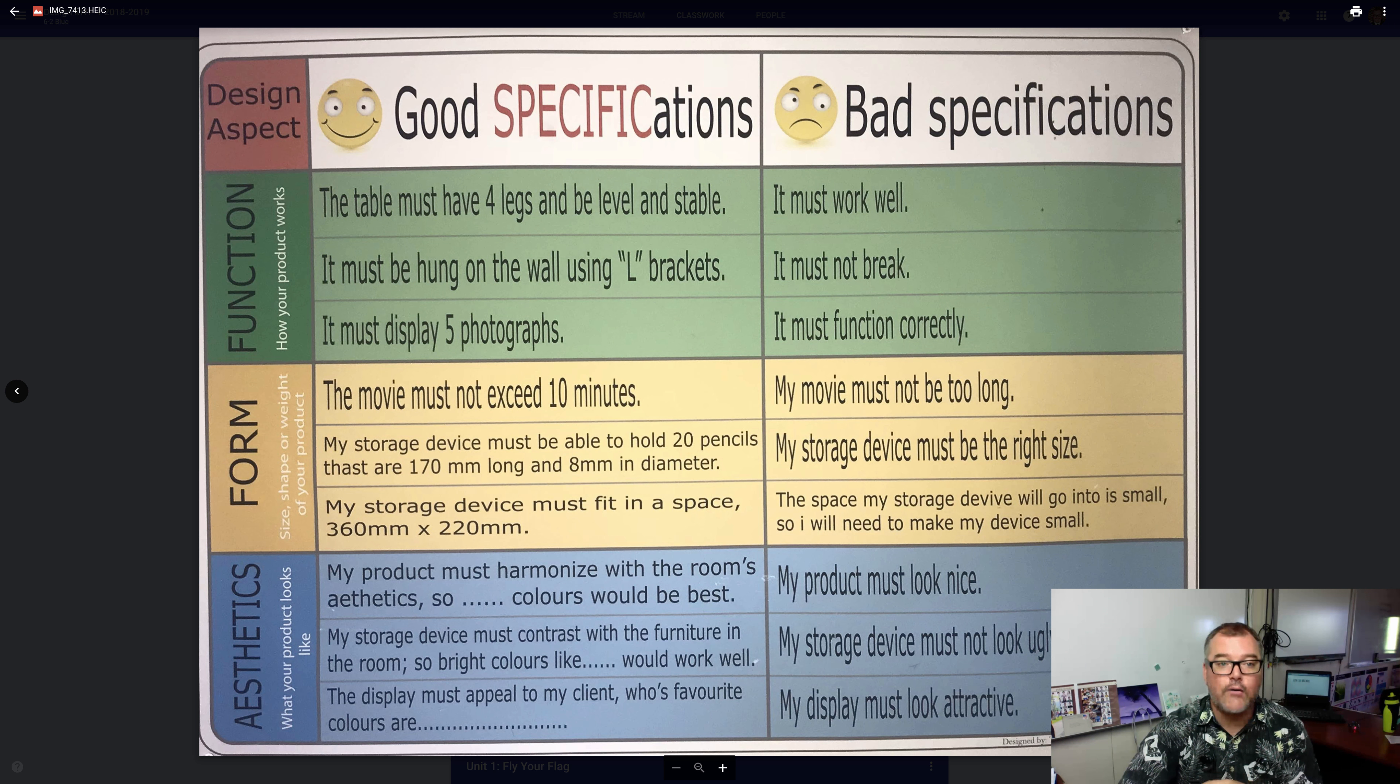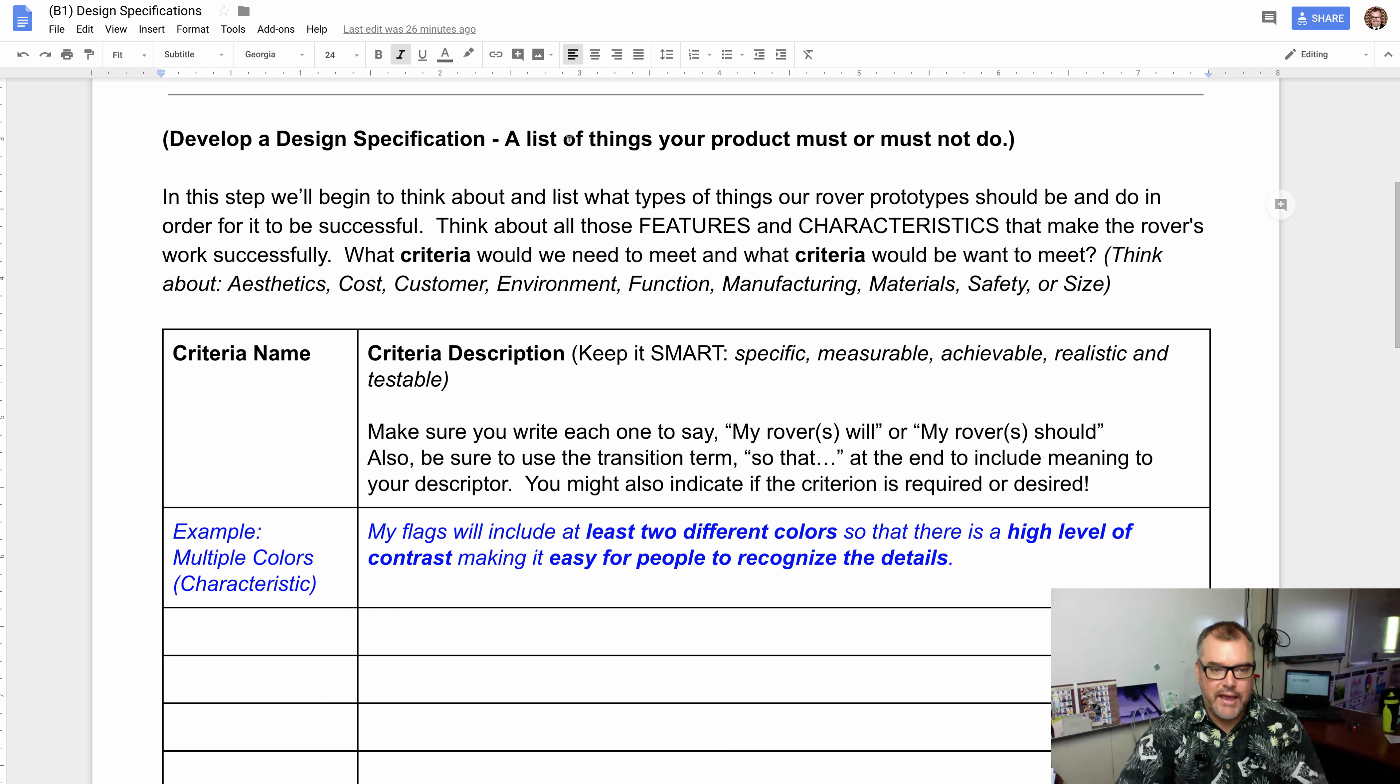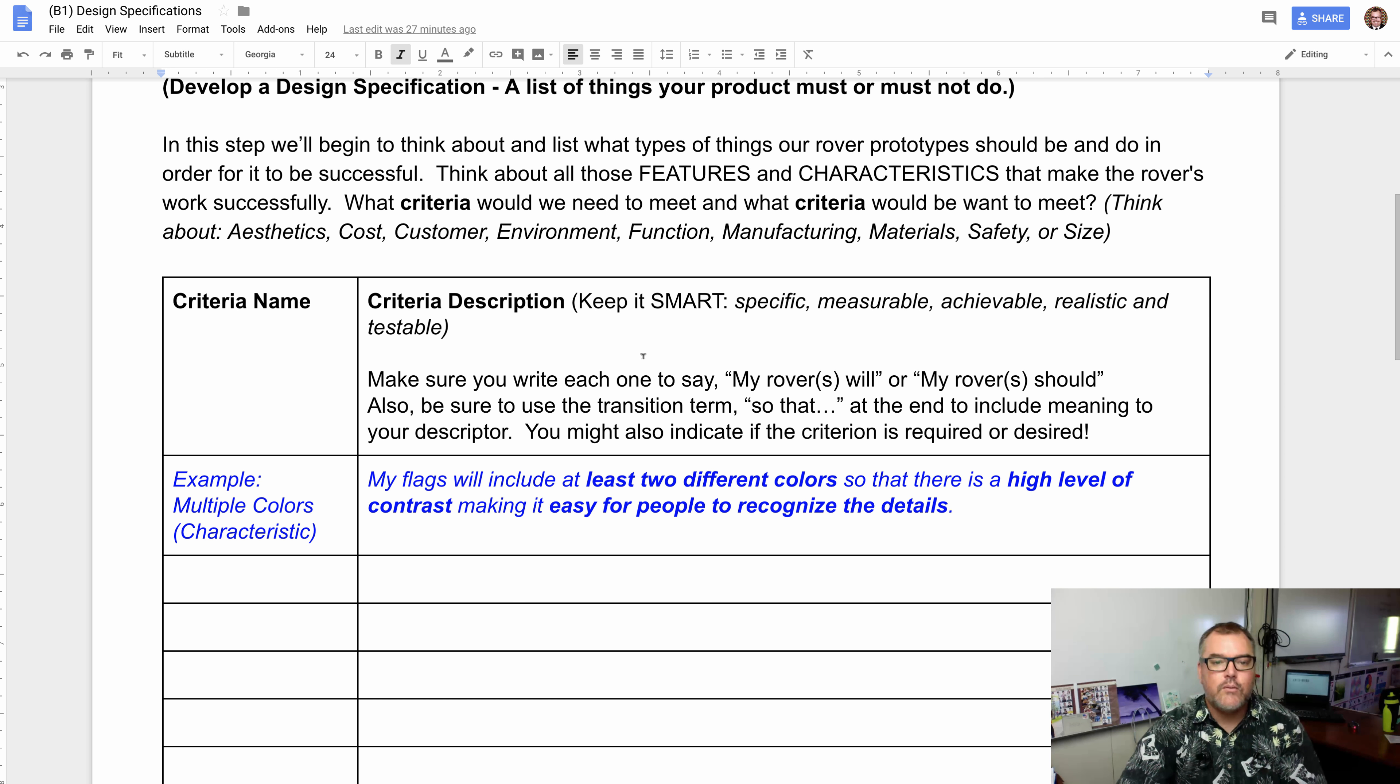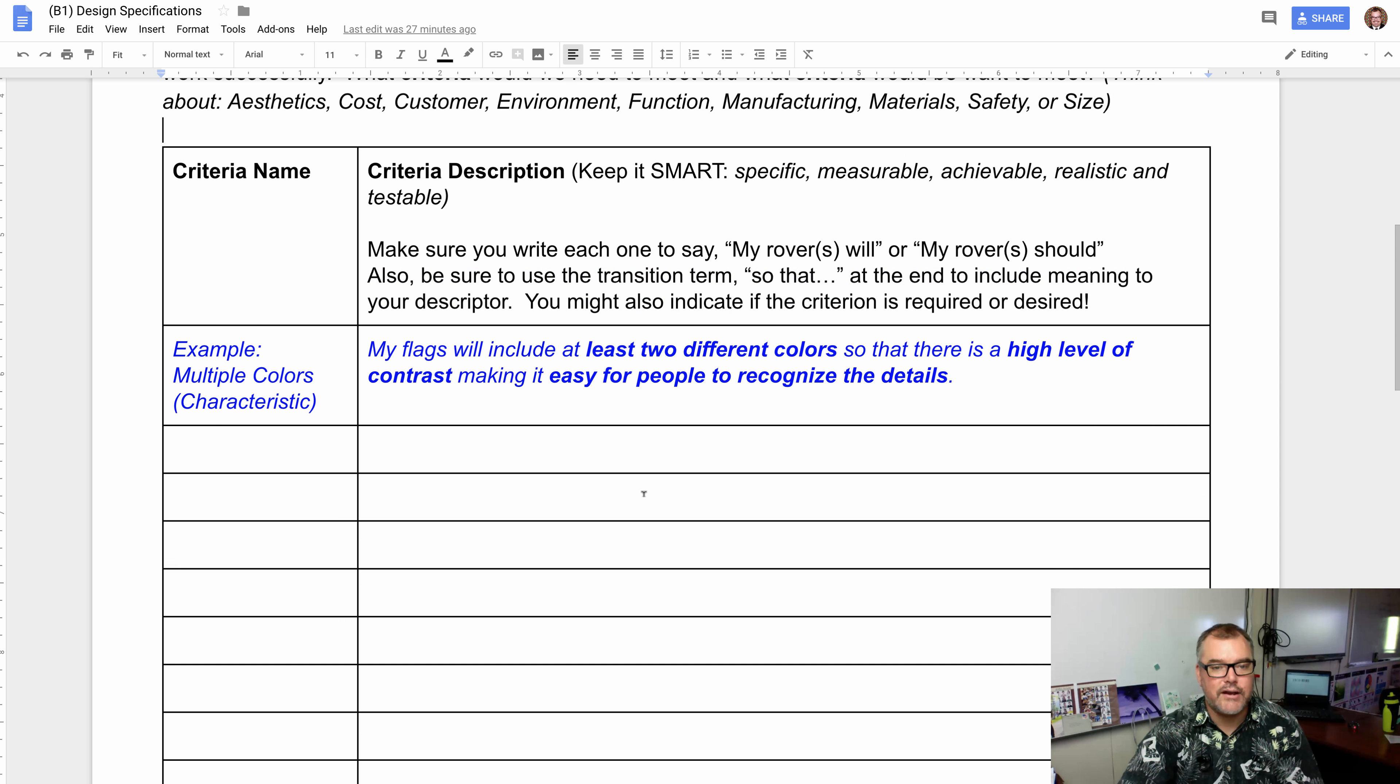What we're going to be doing is we're going to be working on our design specification document in next class. You guys are going to be going through the process of creating these specification criteria. We're going to think about and list all the types of things our rover prototype should be and should do in order for them to be successful. We're going to focus on the features, focus on the characteristics that make our rover successful. My suggestion is make sure that what you create is specific, measurable and achievable. Make sure you start your words off with my rover will or my rover should and make it meaningful.